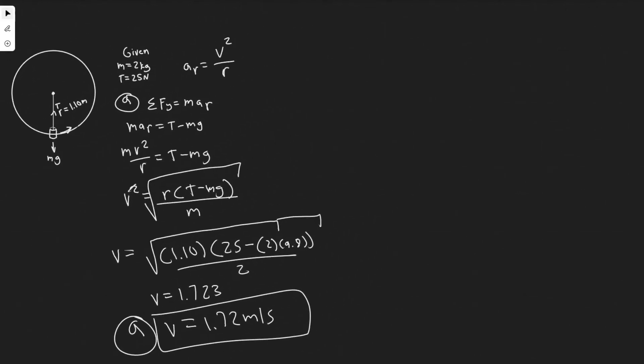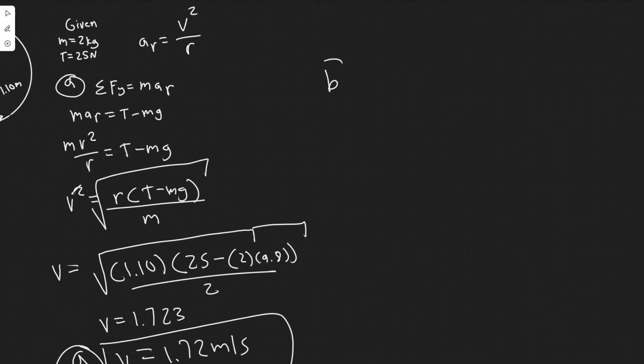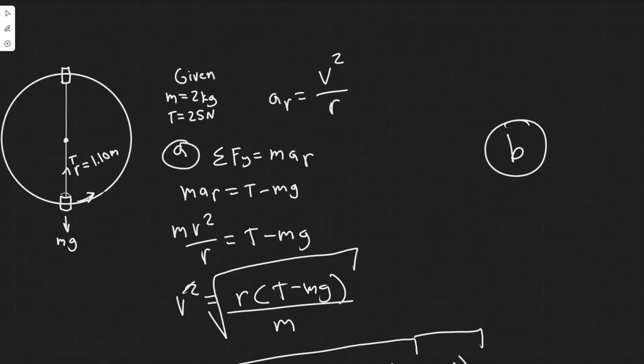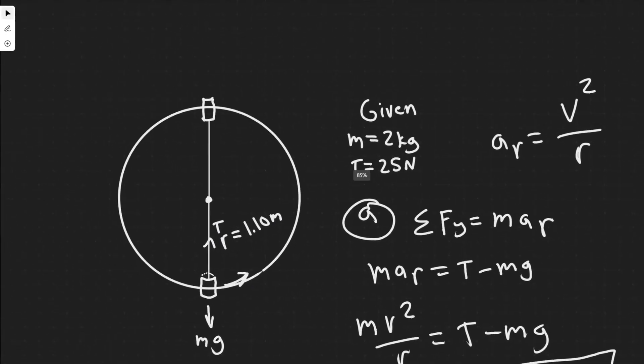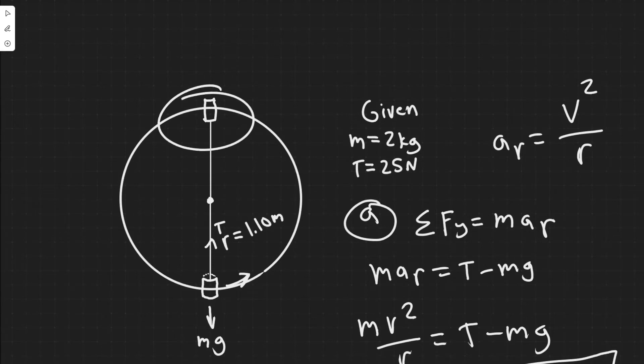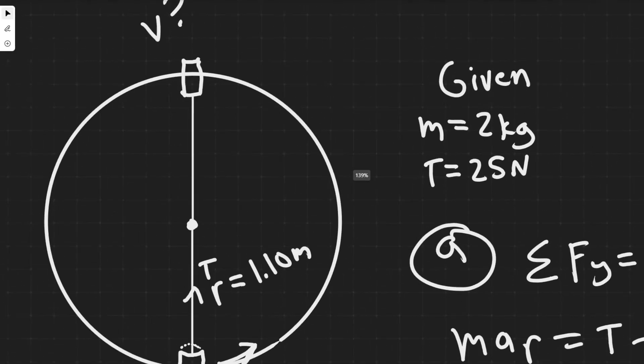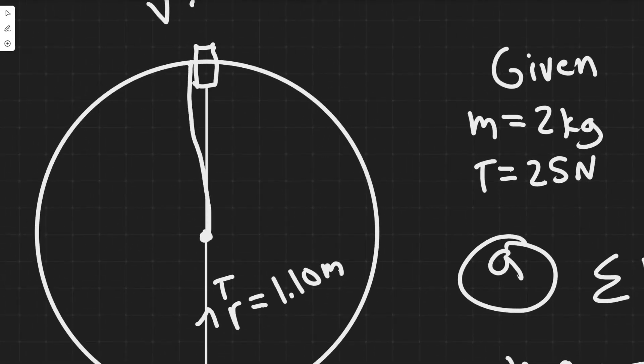Now let's move on to B. For B, we're trying to find how fast the bucket must move at the top of the circle so that the rope does not go slack. Essentially, we're trying to find a minimum speed at this point that it doesn't go slack. Now we're at the top of the circle trying to solve for velocity, a minimum velocity such that this doesn't go slack. What slack means is that this is going to be loose, right? So we want it to be fully tight, basically just constant throughout.